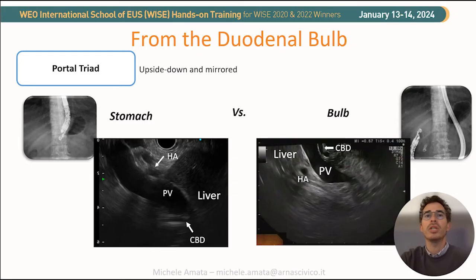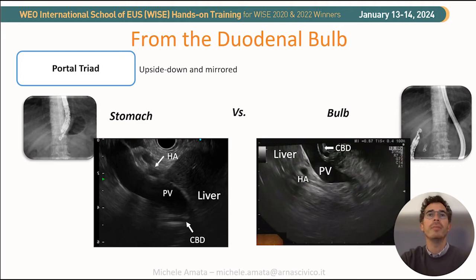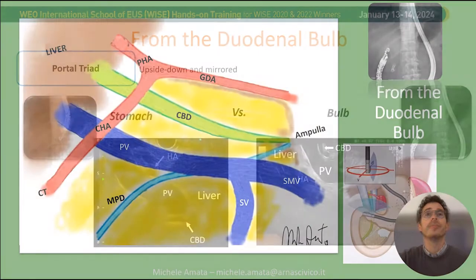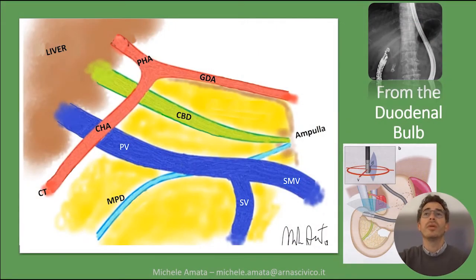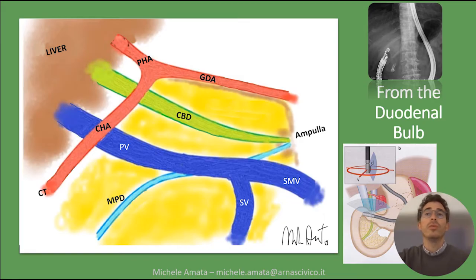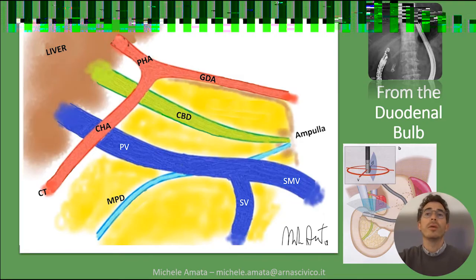From this station, our instrument will be in a long position. We will fully interrogate the head of the pancreas and the bile ducts, and the landmark will be the portal vein. We also need to not apply too much pressure on the tip of the scope because we will compress the biliary structures. So we need to be gentle and reduce compression with the big wheel.